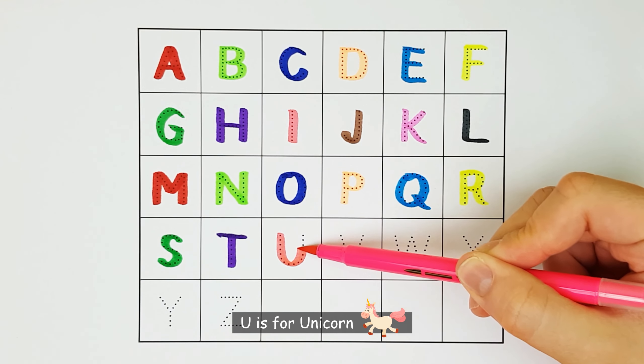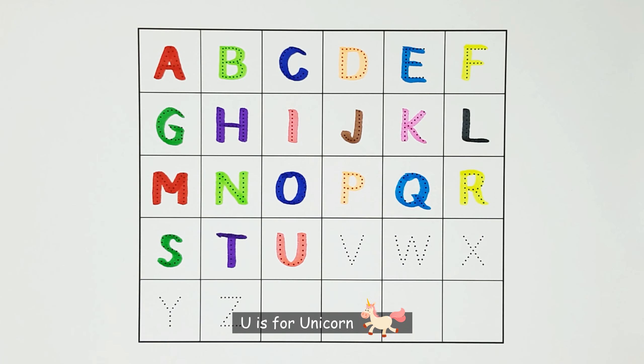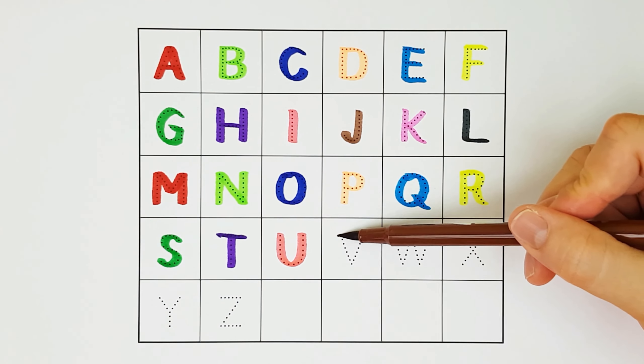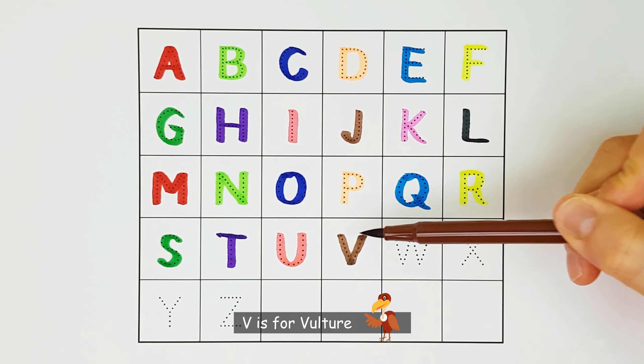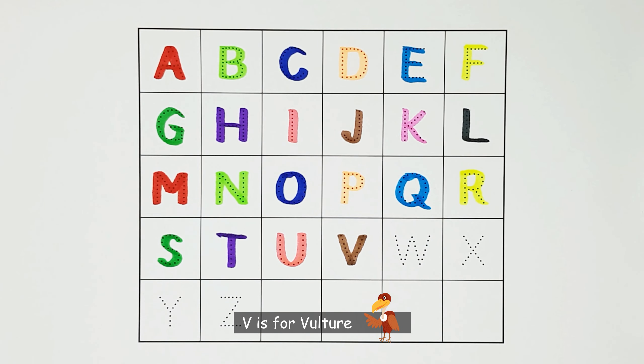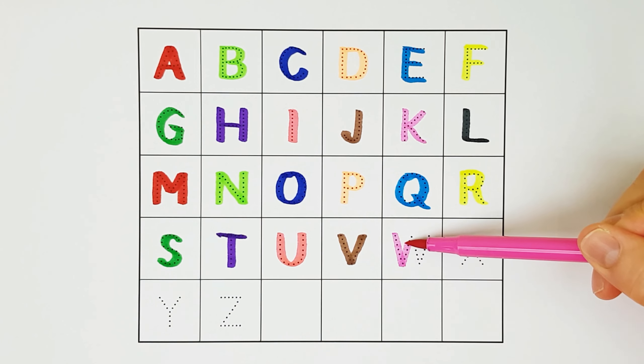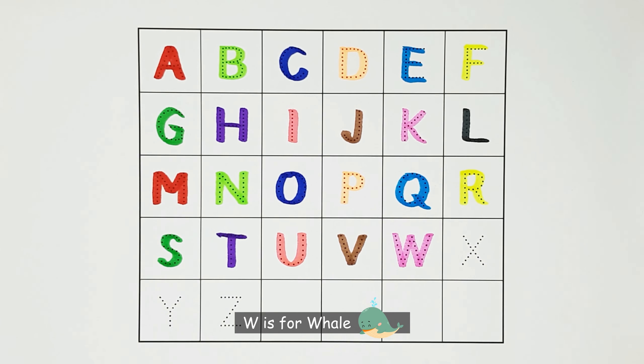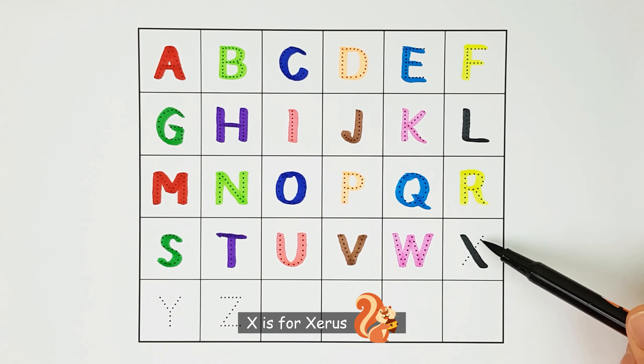U. U is for Unicorn. U. V. V is for Vulture. V. W. W is for Whale. W. X. X is for Xerus. X.